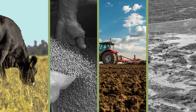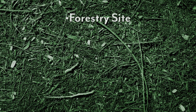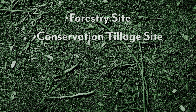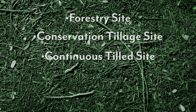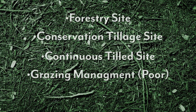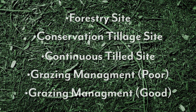Sometimes the managements that we use are not very good, some are good, and so the benefits are shown through the rainfall simulator. Today we have a forestry site. We also have a good conservation tillage site. We have a tilled site that represents continuous tillage situations. We have some grazing management that's poor, and we also have grazing management that's good.